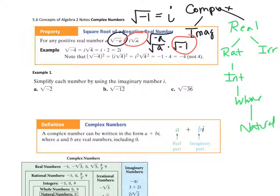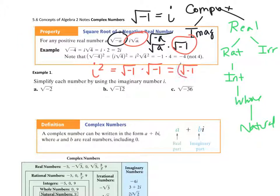Notice that i squared is going to be root negative 1 times root negative 1, which is going to be the square root of negative 1 squared, which is negative 1. So i squared is negative 1.